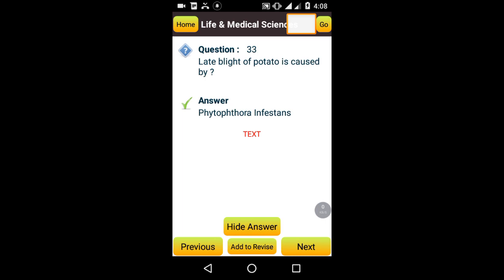Father of plant physiology: Stephen Hales. Late blight of potato is caused by Phytophthora infestans. What is the smallest dicot plant? Arceuthobium. Quinine is obtained from which tree? Cinchona. The plant cell contains chlorophyll. Study of drug plants is called pharmacognosy.